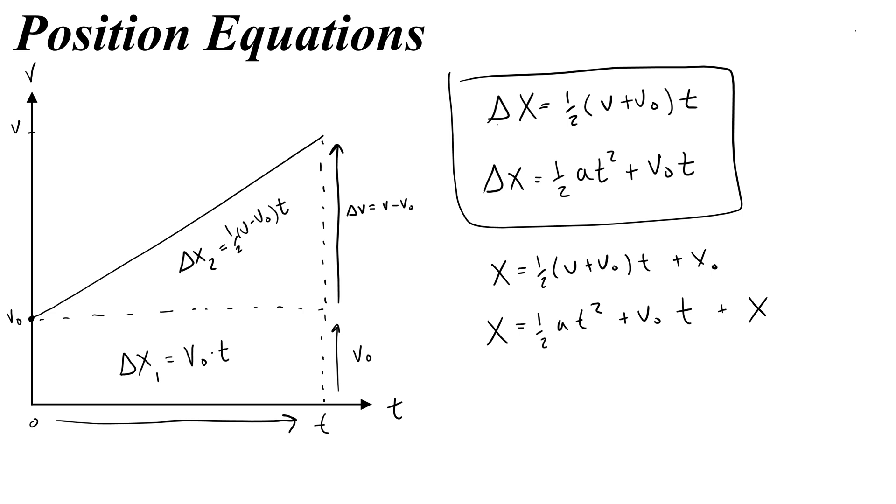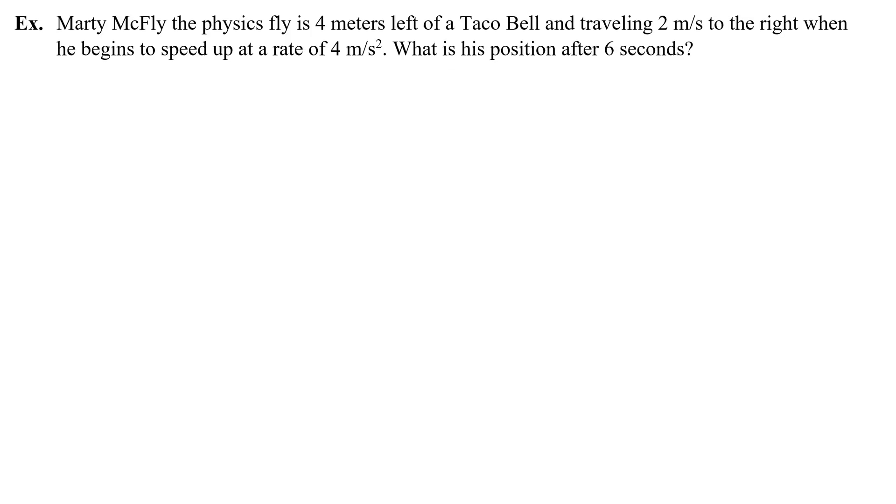Okay, now let's take a look at some example problems where we use these new equations. Marty McFly, the physics fly, is four meters left of a Taco Bell and traveling two meters a second to the right when he begins to speed up at a rate of four meters per second squared. What is his position after six seconds?